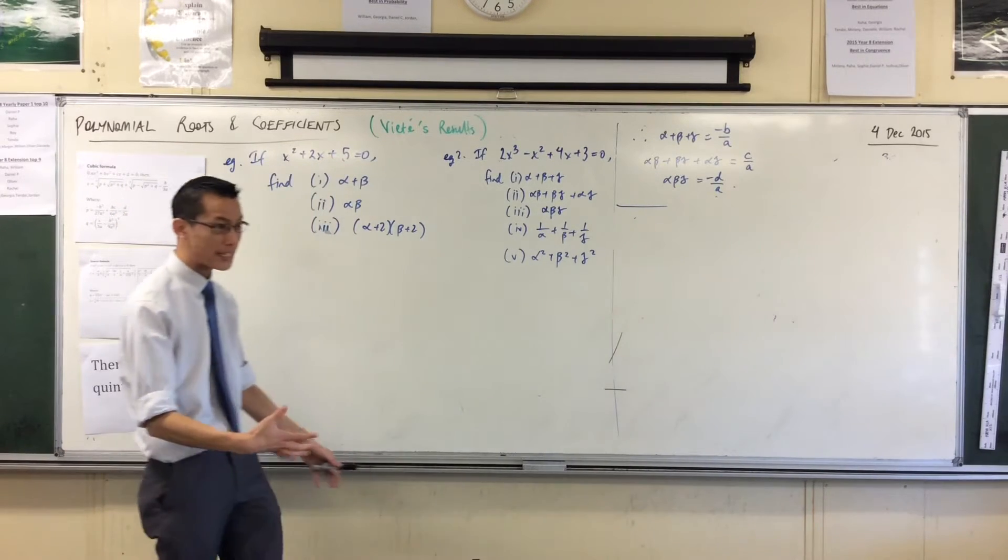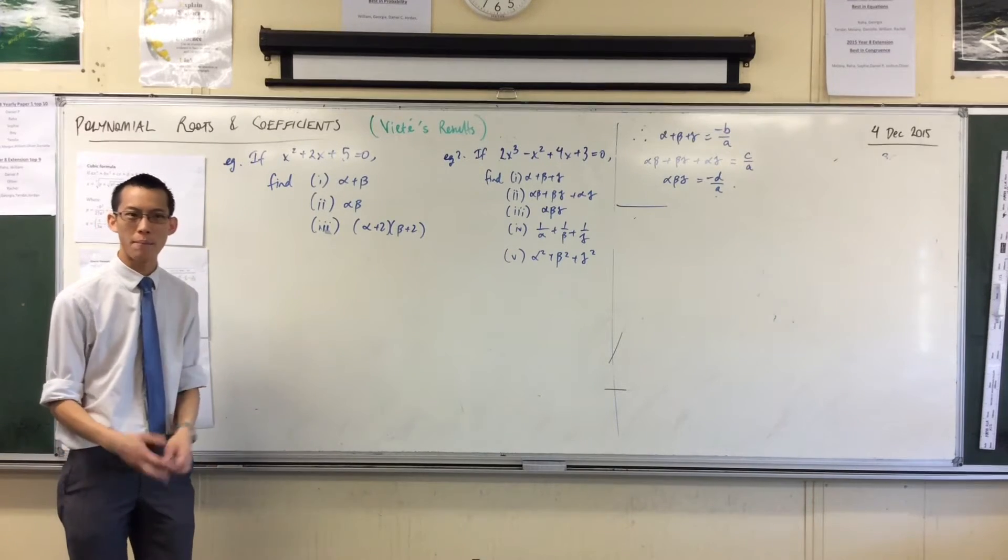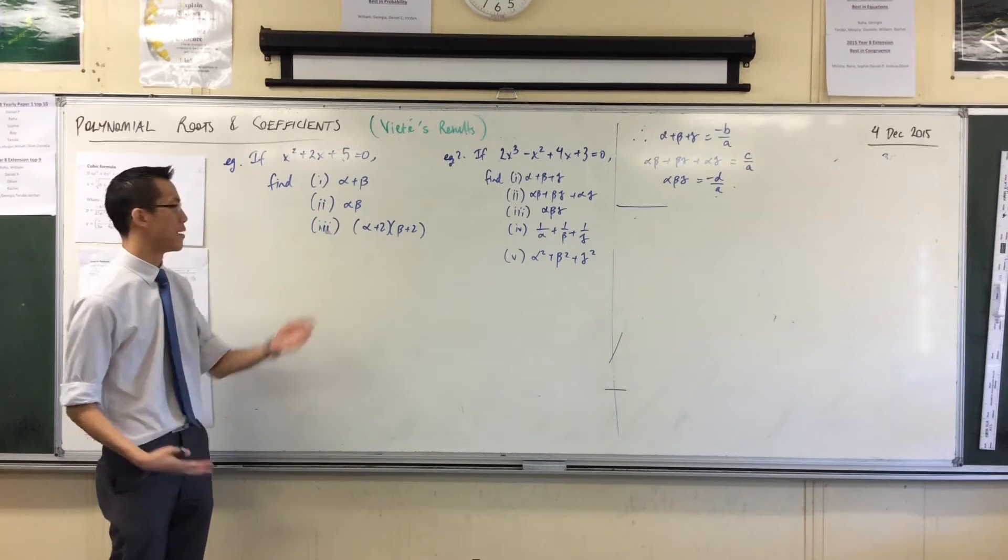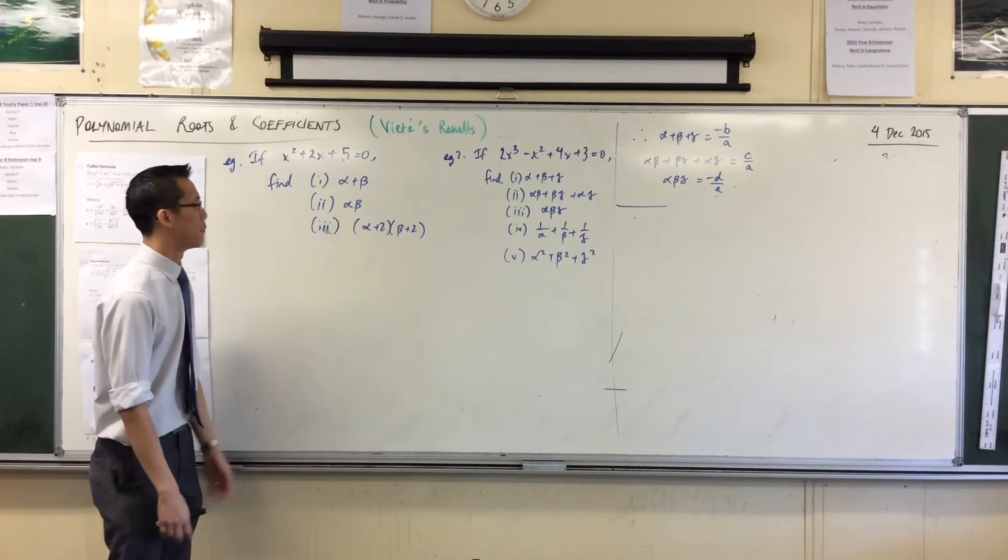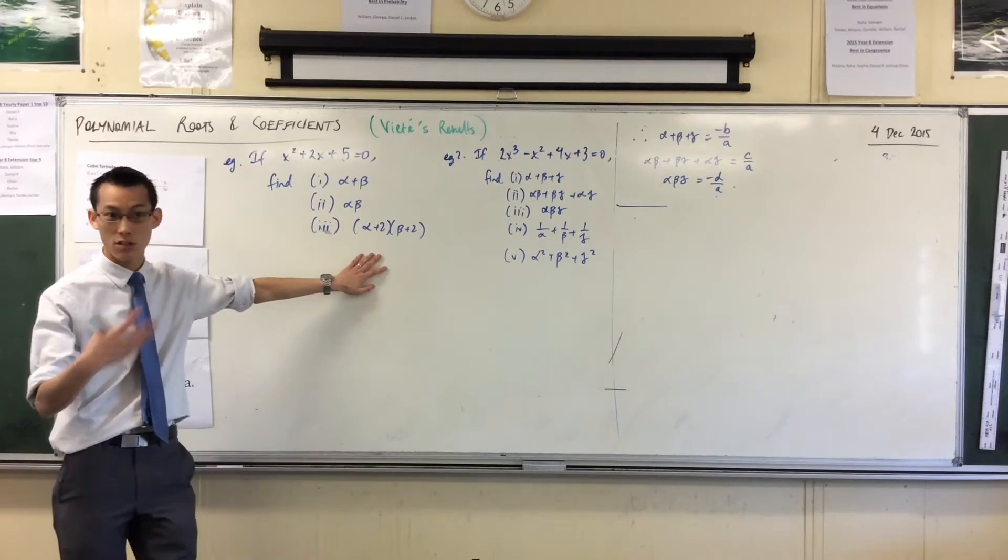The whole point here is these roots don't exist in the real number system. So I can't find them and then add them, or find them and then multiply them. You can actually try to cheat the rules and do that, but it's much more efficient just to use these methods.